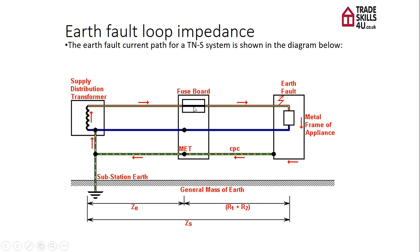When the fault hits the consumer unit or the distribution board, the protective device should operate, so long as the time taken for the current to flow around this loop is within a specified value. We need the resistance or the impedance of this path to be a sufficient value in order for the protective devices to disconnect within the correct time. That's why we've really got to check that the earthing conductor from the distributor or going to our earth electrode is sufficient and does meet those figures.